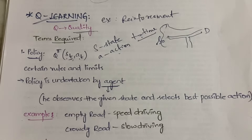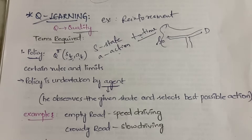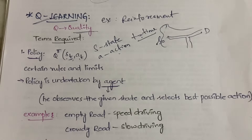Another example: when the road is empty, you drive speedily — that is the correct action. When the road is crowded, you drive slowly — that is also the correct action. These sets of rules and regulations come under the policy.